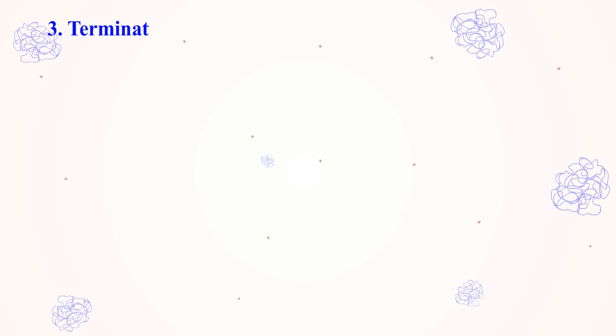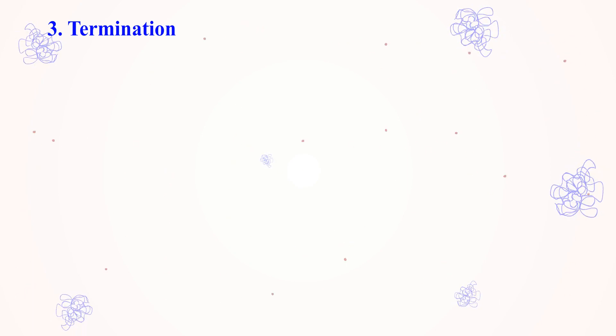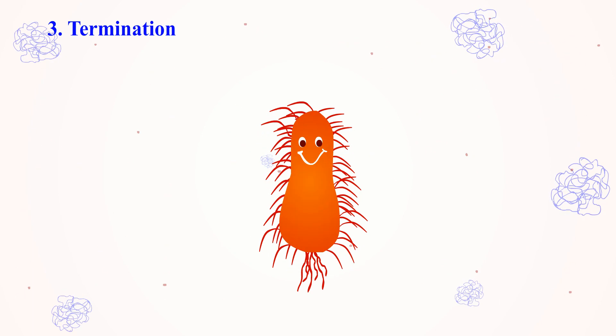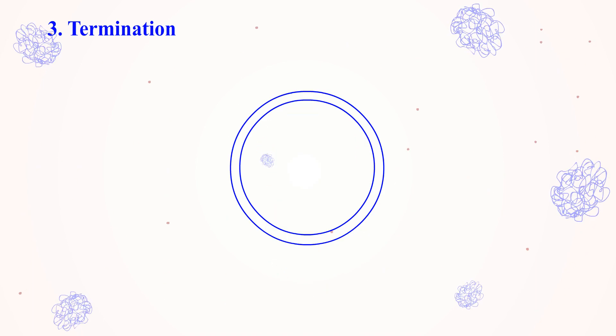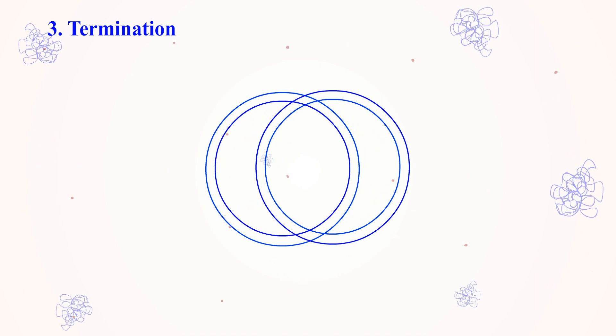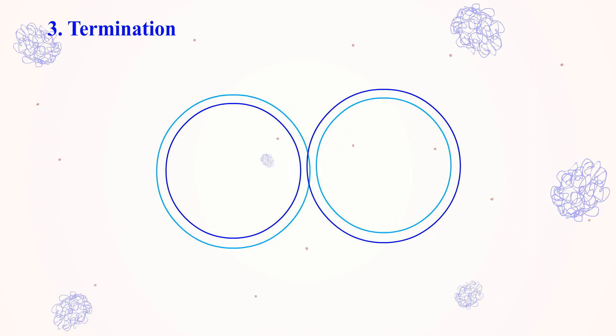The final step of DNA replication is the termination process. This will occur differently in different organisms. In organisms like E. coli, which have circular DNA, the termination occurs when the two replication forks between two terminals meet with each other.